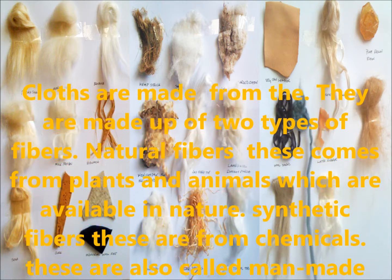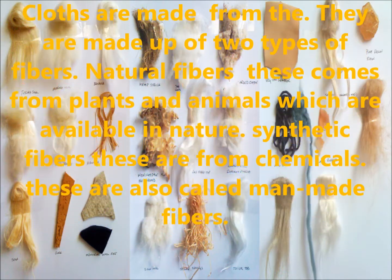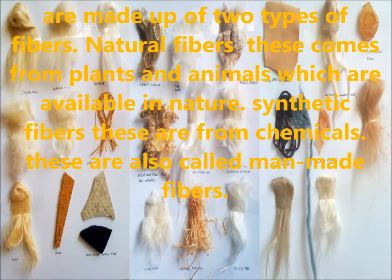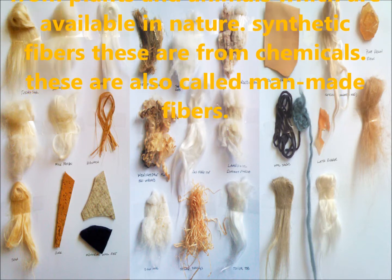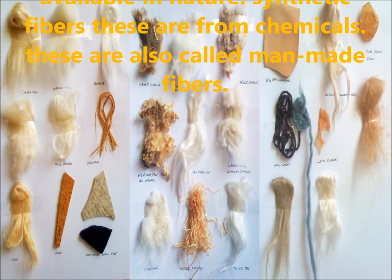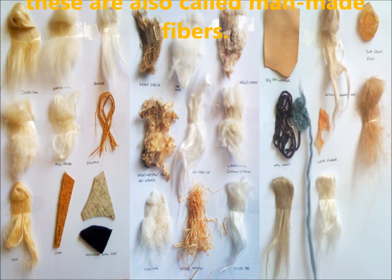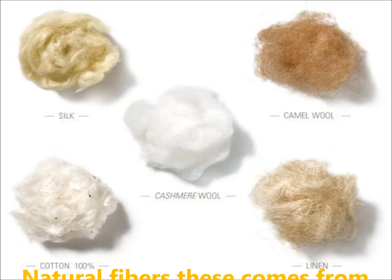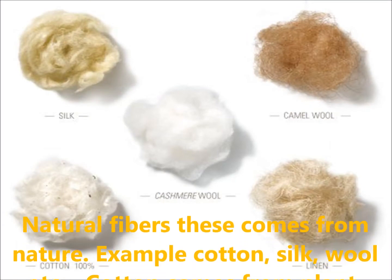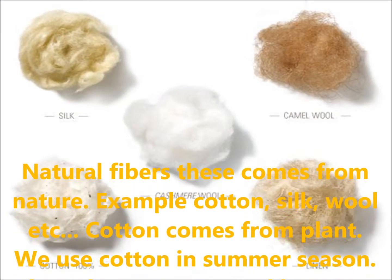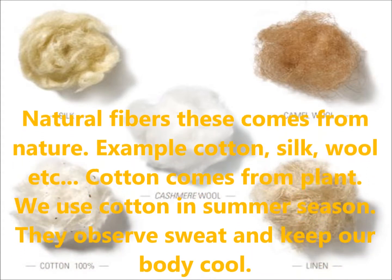Natural fibers come from plants and animals which are available in nature. Synthetic fibers come from chemicals and are also called man-made fibers. Examples of natural fibers include cotton, silk, and wool.